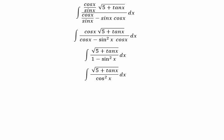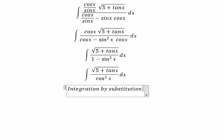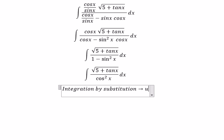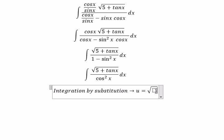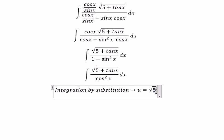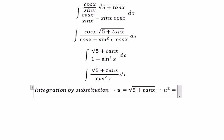Next, we need to use integration by substitution. So we put U equals the square root of 5 plus tan X. We square both sides.